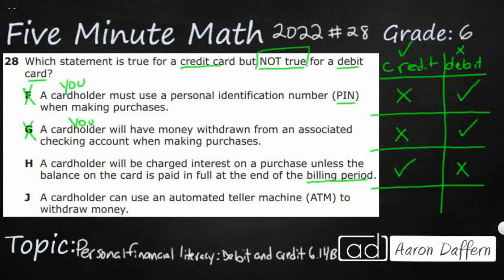Option J: a cardholder can use an ATM to withdraw money. That's yes for debit, but no for credit, because credit is not attached to your checking account. So as you can see, our answer is H.